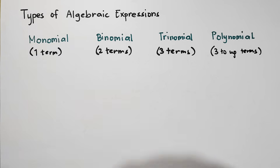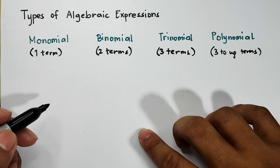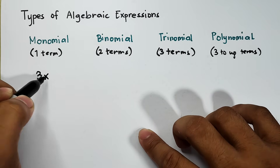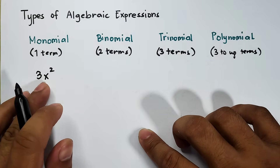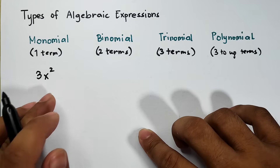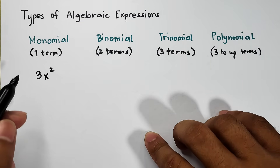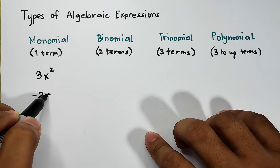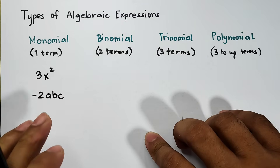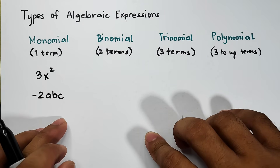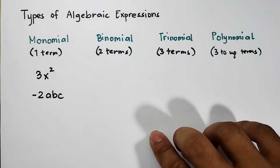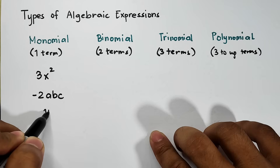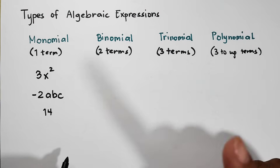I will give you two examples for each type. For the monomial — a single-term algebra expression — an example is 3x or 2x squared. Another example is negative 2ABC. Though we have three different variables, it is only one term. We could also consider a constant like 15 as a monomial — single term only.